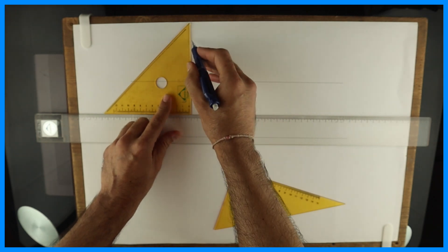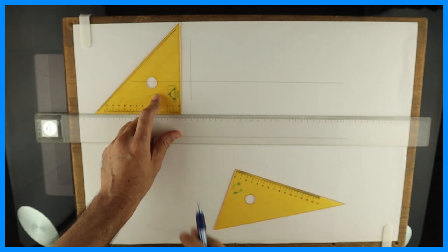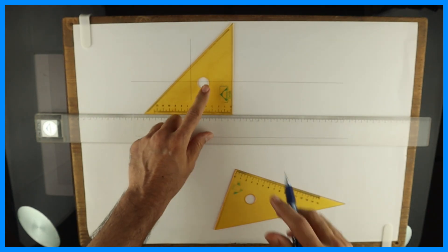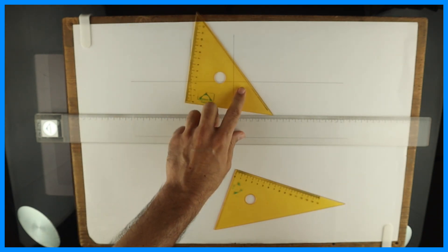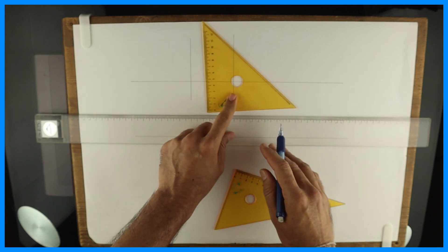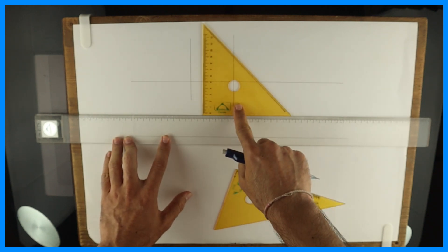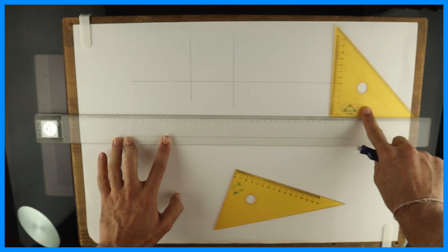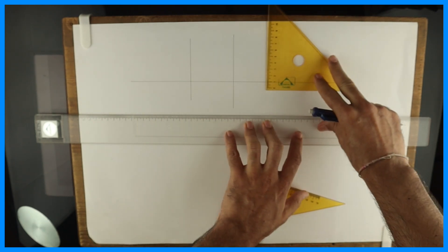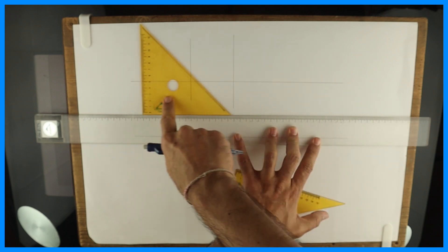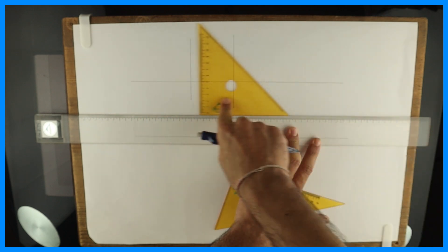Now see this. What we can do with this set square - we can draw vertical lines. So with T scale we can draw horizontal lines, and with set square... And when you are keeping it, make sure that it should slide on T scale. It should not go inside the T scale like this. It should be sliding on the T scale like this. There should not be any gap.